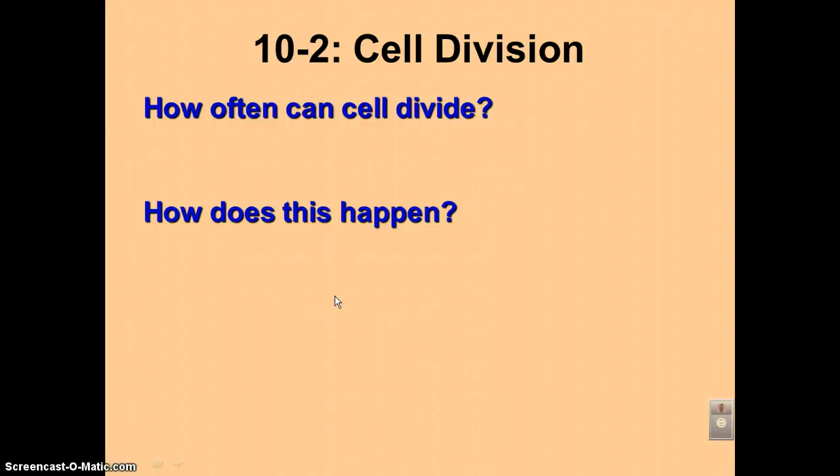In podcast number eight, we're going to talk about how often a cell can divide, and we're going to learn about something called the Hayflick Limit and a chromosomal structure called a telomere.